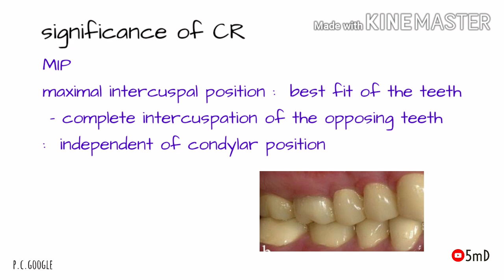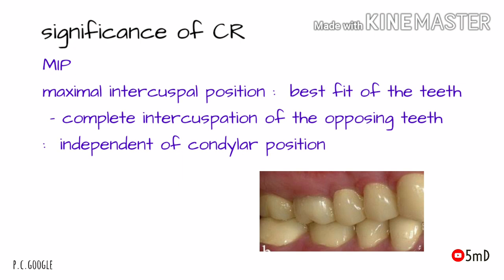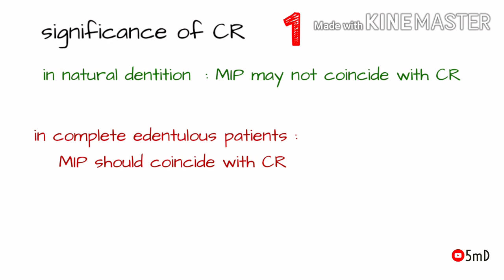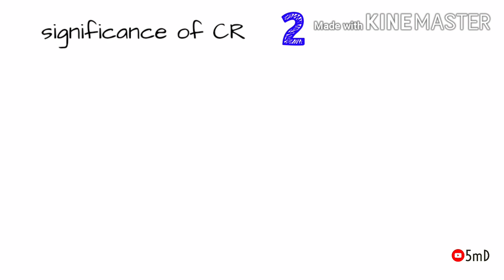Now, what is the significance of centric relation (CR)? Before that, we need to know about MIP — maximal intercuspal position. In simple words, it is the best fit of the teeth, that is, the complete intercuspation of the opposing teeth, which is not dependent on condylar position. The CR and MIP need not coincide with each other in natural dentition, but in a completely edentulous patient it is better if MIP and CR correlate.